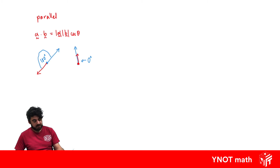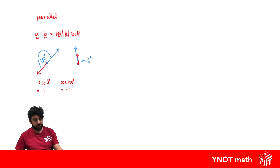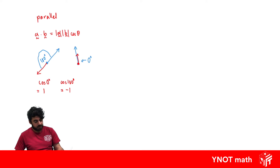This means in our dot product we're looking for cos of zero or cos of 180. The cos of zero is one and the cos of 180 is minus one — those are the values we're looking for when two vectors are parallel. We also have another way to determine if vectors are parallel.